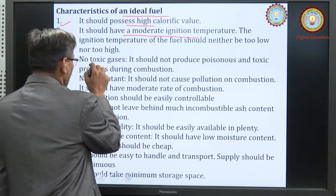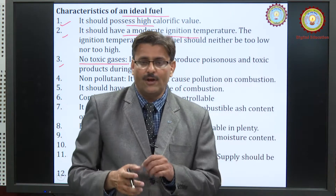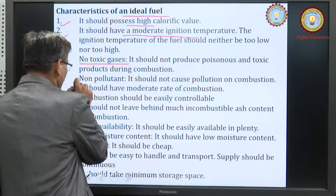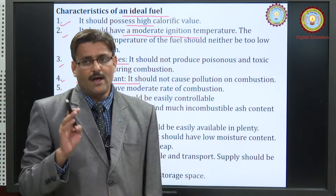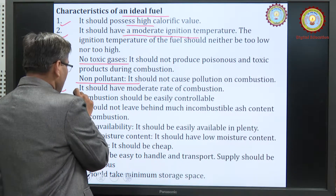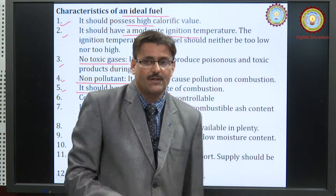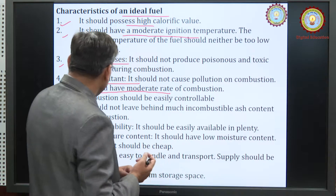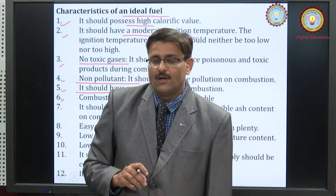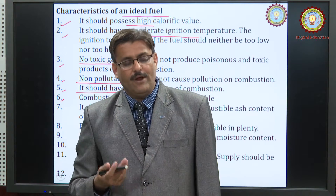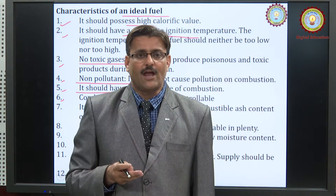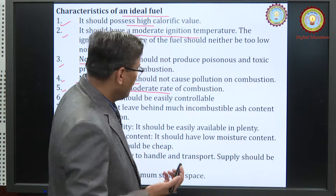Third, there should be no toxic gases on combustion — no release of toxic gases like nitrogen oxides or sulfur oxides. It should not be polluting; the fuel should not create any type of pollution on combustion. Next, it should have a moderate rate of combustion; the rate of combustion should not be very high. Sixth, combustion should be easily controllable — whenever needed it may be cut off. Gaseous and liquid fuels can be controlled by switches and knobs, but solid fuels cannot be controlled by switches.